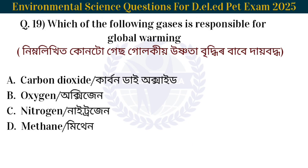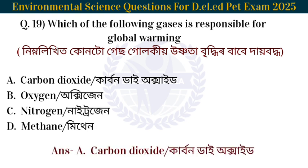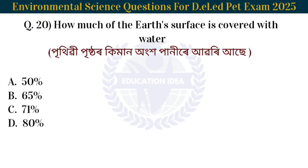Next question: Which of the following gases is responsible for global warming? Nimnali khita kuntu gas gulo ke usnata bidhir babe. The answer is related to greenhouse gases. The Earth's water coverage is 71%.